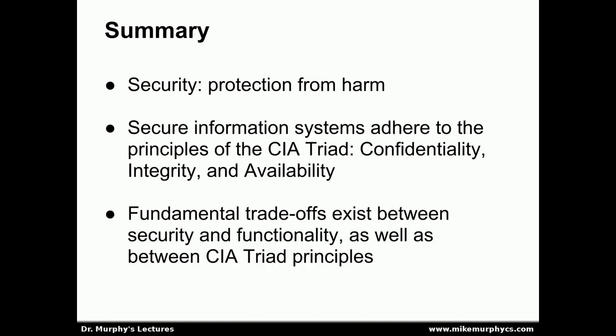To summarize, our main goal with security is to provide protection from harm. In the context of information systems, we're really focused on the principles of the CIA triad: confidentiality, integrity, and availability. Fundamental trade-offs exist between security and functionality, as well as between the principles of the CIA triad. There is no magic bullet to security — no simple product we can buy to make a system immediately secure. There are a number of trade-offs to consider in order to design a system that attempts to maximize the principles of the CIA triad, including availability to authorized users.